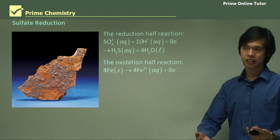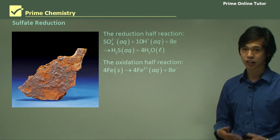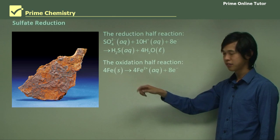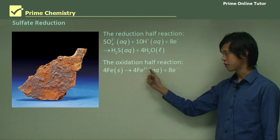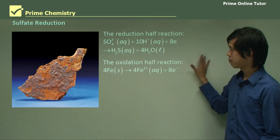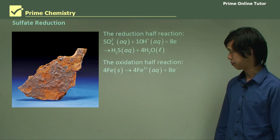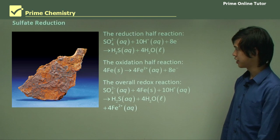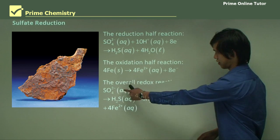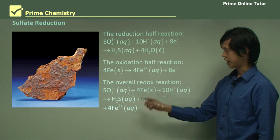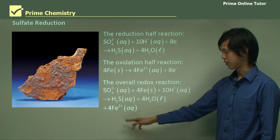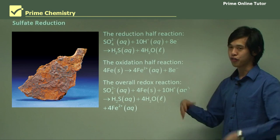The oxidation half-reaction is to do with metal or iron, because we're corroding it. You can see four Fe solid — the iron metal — turns into the ferrous ion, Fe²⁺, all four of them, and eight electrons. The number of electrons consumed is the same. For the overall reaction, take all of the things on the left-hand side, add them together, ignoring the electrons. You get H₂S plus four H₂O and four ferrous ions. That is your overall reaction.